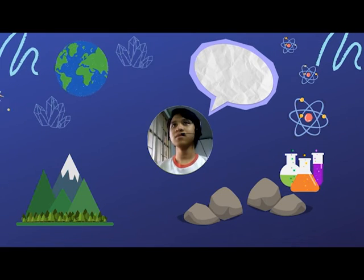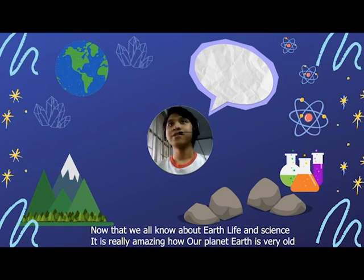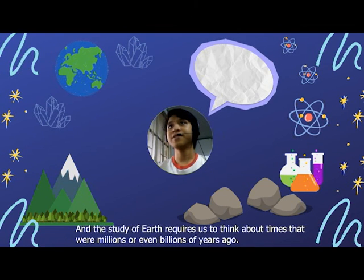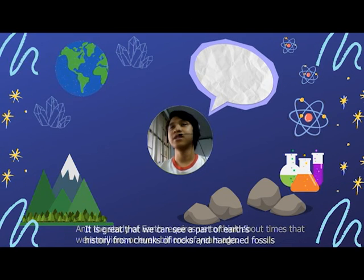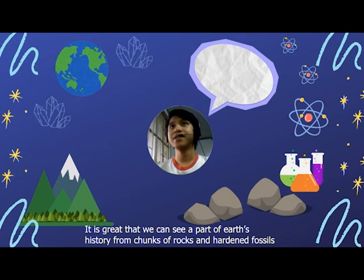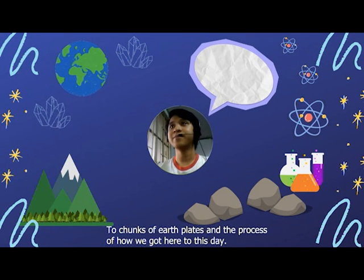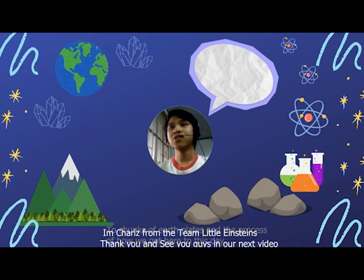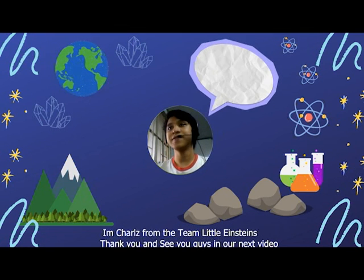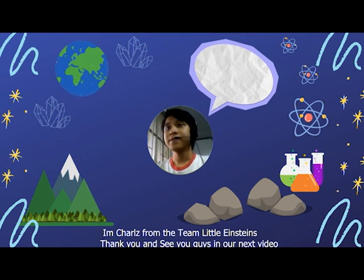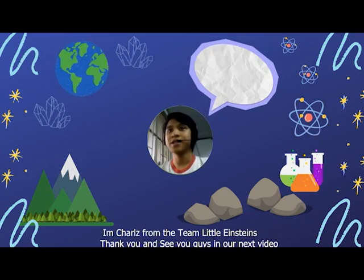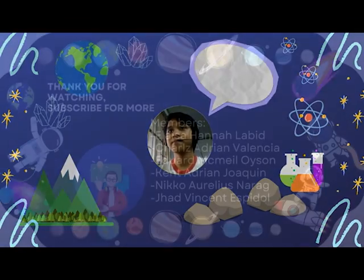Later, scientists used absolute dating to determine the actual number of years ago that events happened. That's all for the geological timescale. Now that we all know about Earth Life and Science, it really is amazing how old our planet Earth is. The study of Earth requires us to think about times that were millions or even billions of years ago. It is great that we can see part of Earth's history from chunks of rocks, hardened fossils, earth plates, and the processes of how we got here to this day. Hopefully you learned something from this video — thank you. I'm Charles from Team Little Einstein. Thank you and see you in our next video.